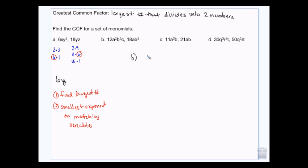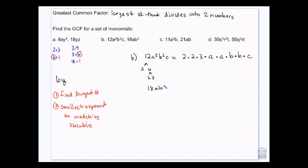I'm going to show you another way to do this. If I do a factor tree for 12, I get 2 times 6, which is 2 times 3, so I get 2 times 2 times 3 times A times A times B times B times C. And then if I do 18ab to the third, that's going to be 2 times 3 times 3 times A times A times B times B times B. 18 became 2 times 9, and then 9 became 3 times 3. The ends of the branches are the numbers that you use.